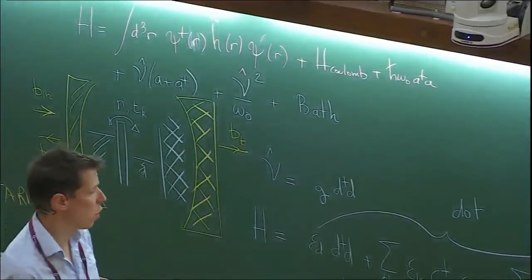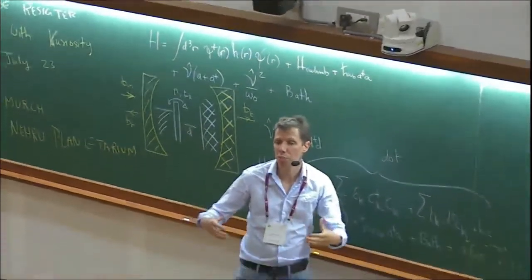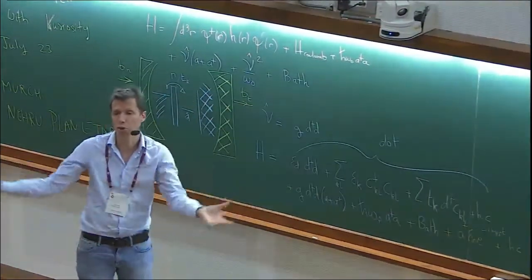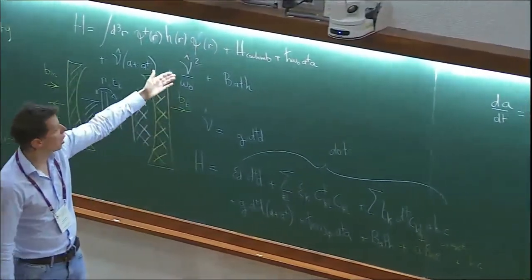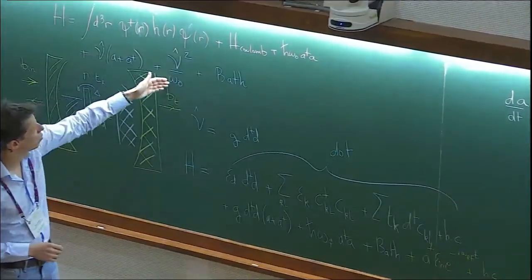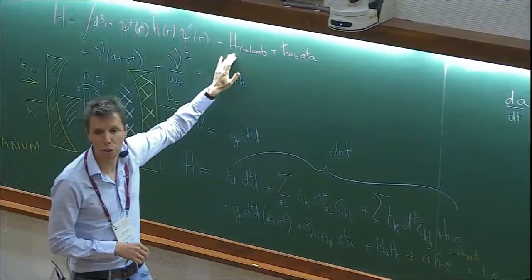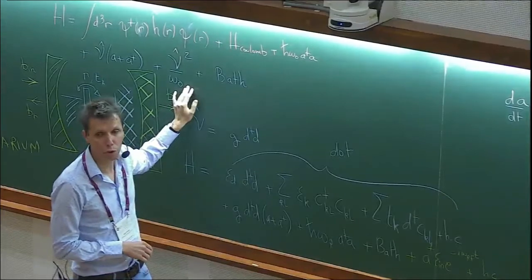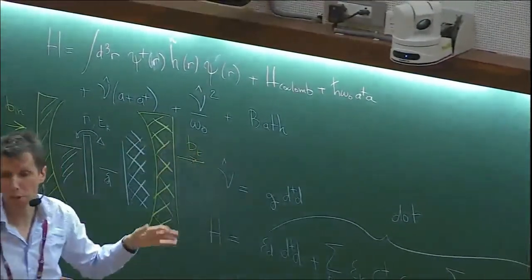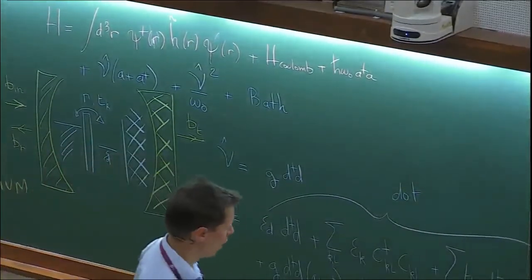For a single quantum dot, in principle there can be interaction between the dot and the leads through the mode, since the mode is spread over the whole system. But if you plug in numbers and you're not in the ultra-strong coupling regime — if g is much smaller than ω₀ — it's a very small effect. The photonic pseudo-potential is at most in the microvolt range whereas the static Coulomb energy is in the millivolt range: three orders of magnitude difference.